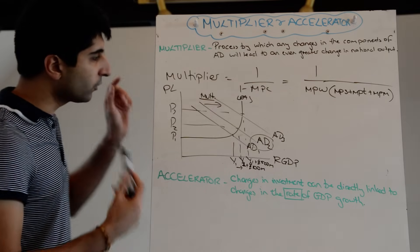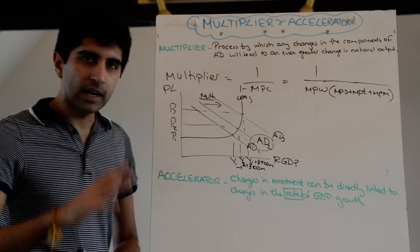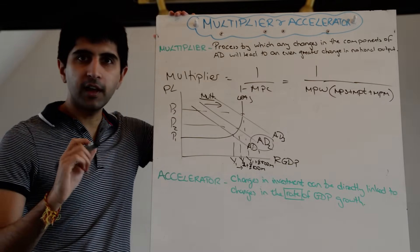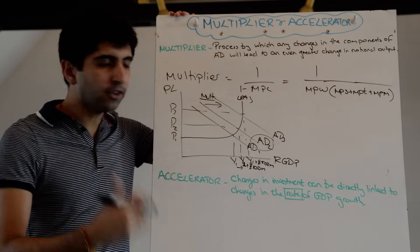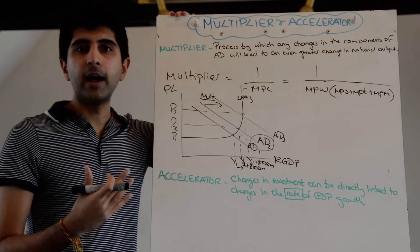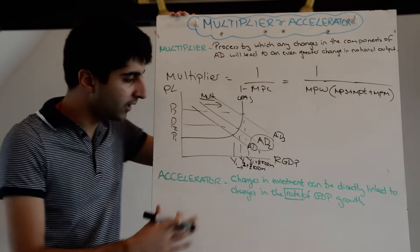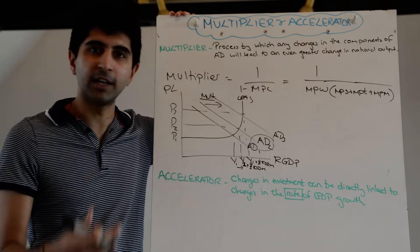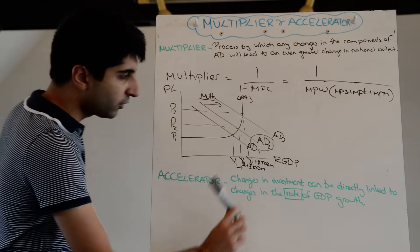Let's also now look at the accelerator effect, which is another high-level concept in macroeconomics. The accelerator is a very simple effect. The multiplier is all about consumer spending — how much extra spending takes place when an initial increase in AD occurs. The accelerator looks more at investment; it looks at firms spending money, not consumers spending money.